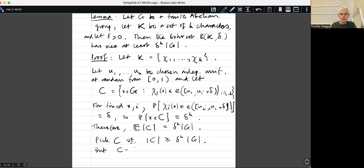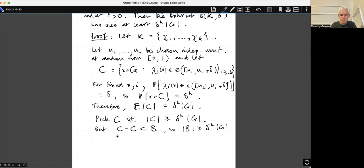But C minus C is a subset of B and it's at least as big as C. So the size of B is also greater than the delta to the K of G. And just in case you don't find this statement here completely obvious, just notice that this is, that's the end of the proof.